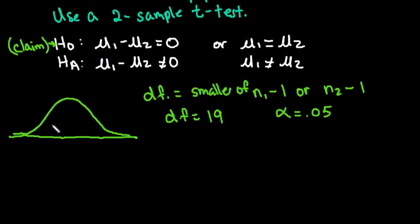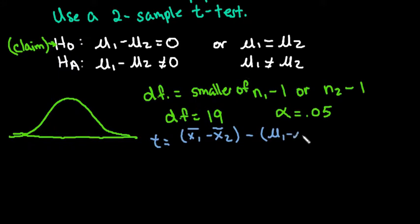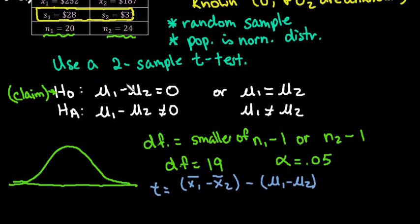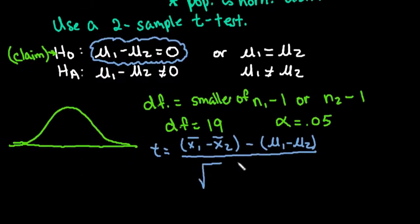The calculator will give us the standardized test statistic, but we need the formula in case we have to show work. The formula is: t equals (x̄1 minus x̄2 minus the hypothesized difference (mu1 − mu2)) divided by the square root of (s1² / n1 plus s2² / n2). The bottom portion is called the standard error. Writing the null as mu1 minus mu2 equals zero makes it easier to apply this formula directly.